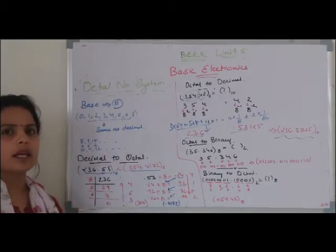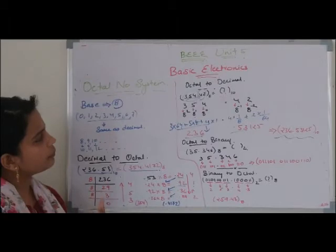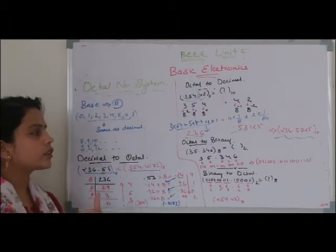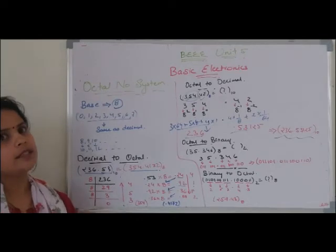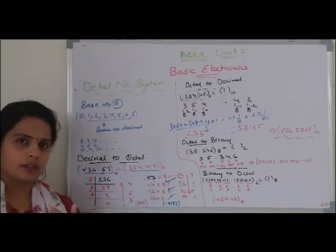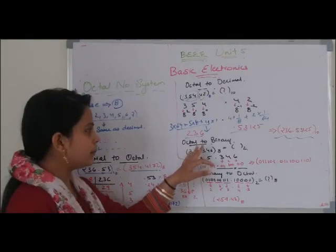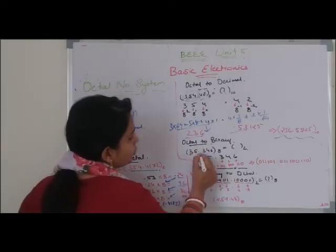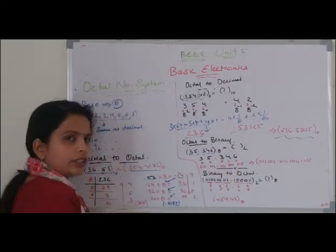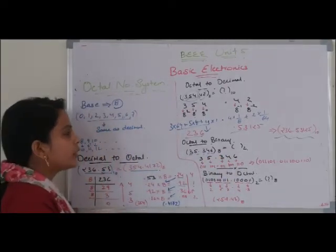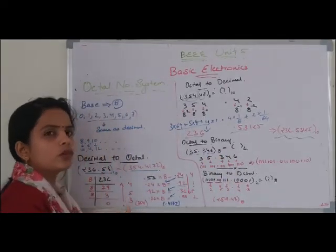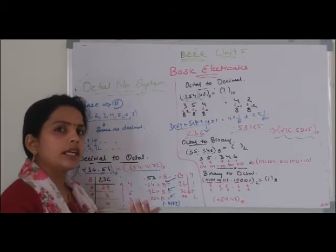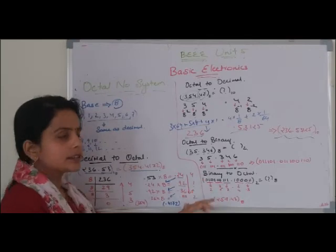इसको याद करने के लिए एक छोटी सी trick बताता हूँ। Binary number का base 2 है और octal number का base 8 है, and 8 is equal to 2 to the power 3. So when converting octal to binary, we convert each digit individually to binary, and the total number of digits we keep is 3, because 8 is 2 to the power 3.